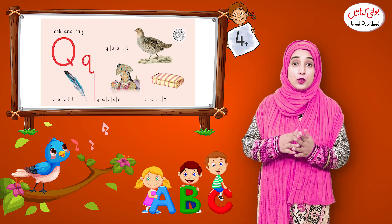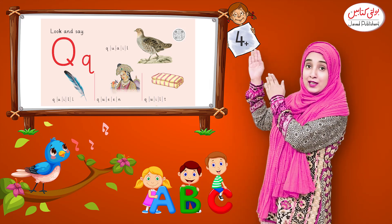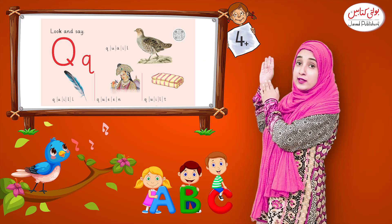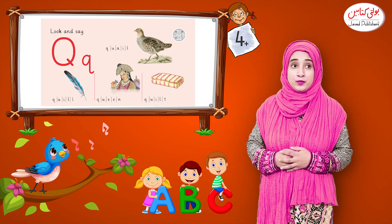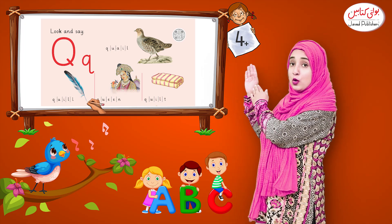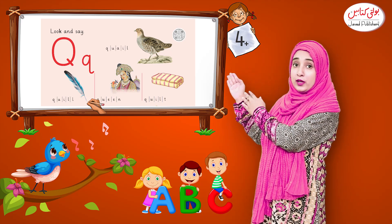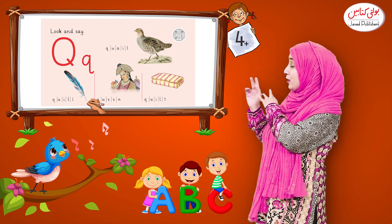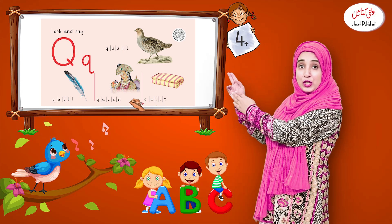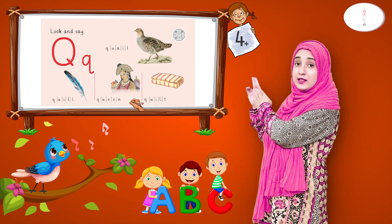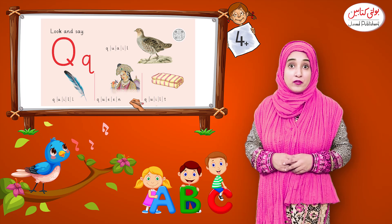Now open your book and look here. What is this? Q — Khoa — Quail. This is the bird. Now look at the next picture: Q — Khoa — Koel. This is the Koel. Now look at the third picture: Q — Khoa — Coin. This is the Coin.